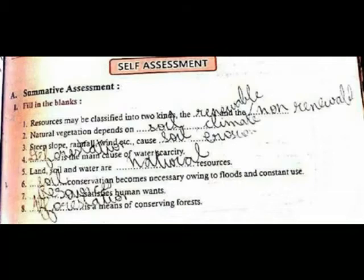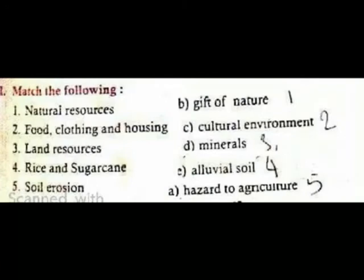Soil conservation becomes necessary owing to food and continued use. Resources satisfy human wants. Aforestation is a means of conserving forests. Natural resources are the gift of nature. Food, clothing and housing are basic needs. Cultural environment.